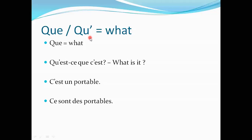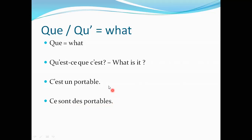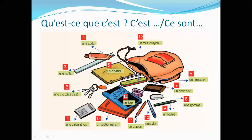'Qu'' (q-u-apostrophe) means 'what,' and takes an apostrophe when followed by a noun or verb beginning with a vowel. 'Qu'est-ce que c'est?' is a complete question meaning 'what is it?' For example, if your parents bring a gift and you don't know what it is, you ask 'qu'est-ce que c'est?' In singular they reply 'c'est un portable' — it is a mobile phone. In plural: 'ce sont des portables.' The question form is 'qu'est-ce que c'est?'